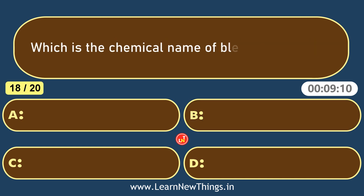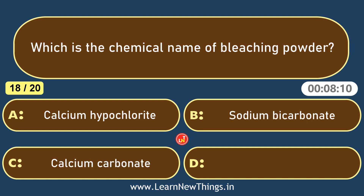Which is the chemical name of bleaching powder? Calcium hypochlorite.